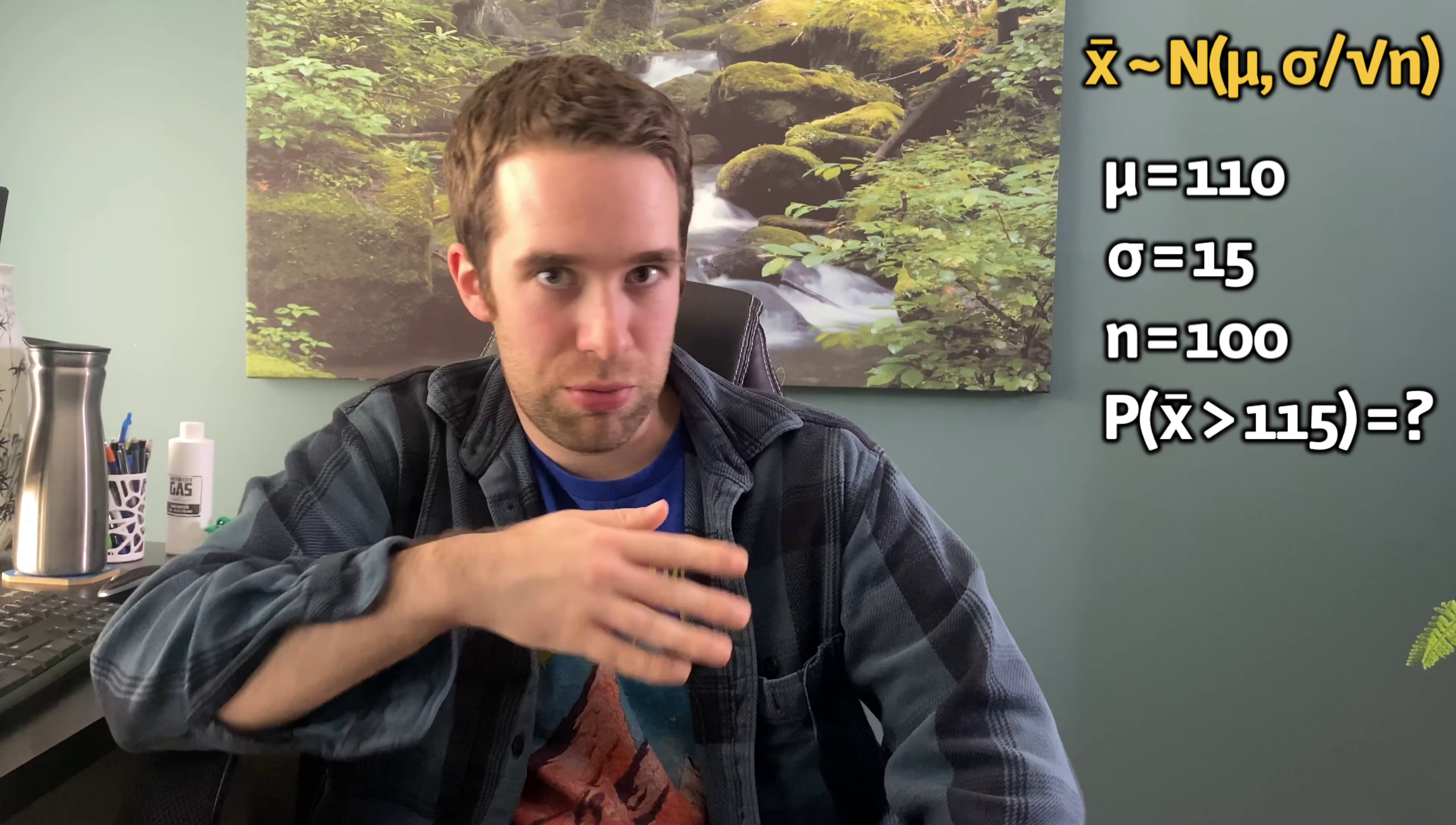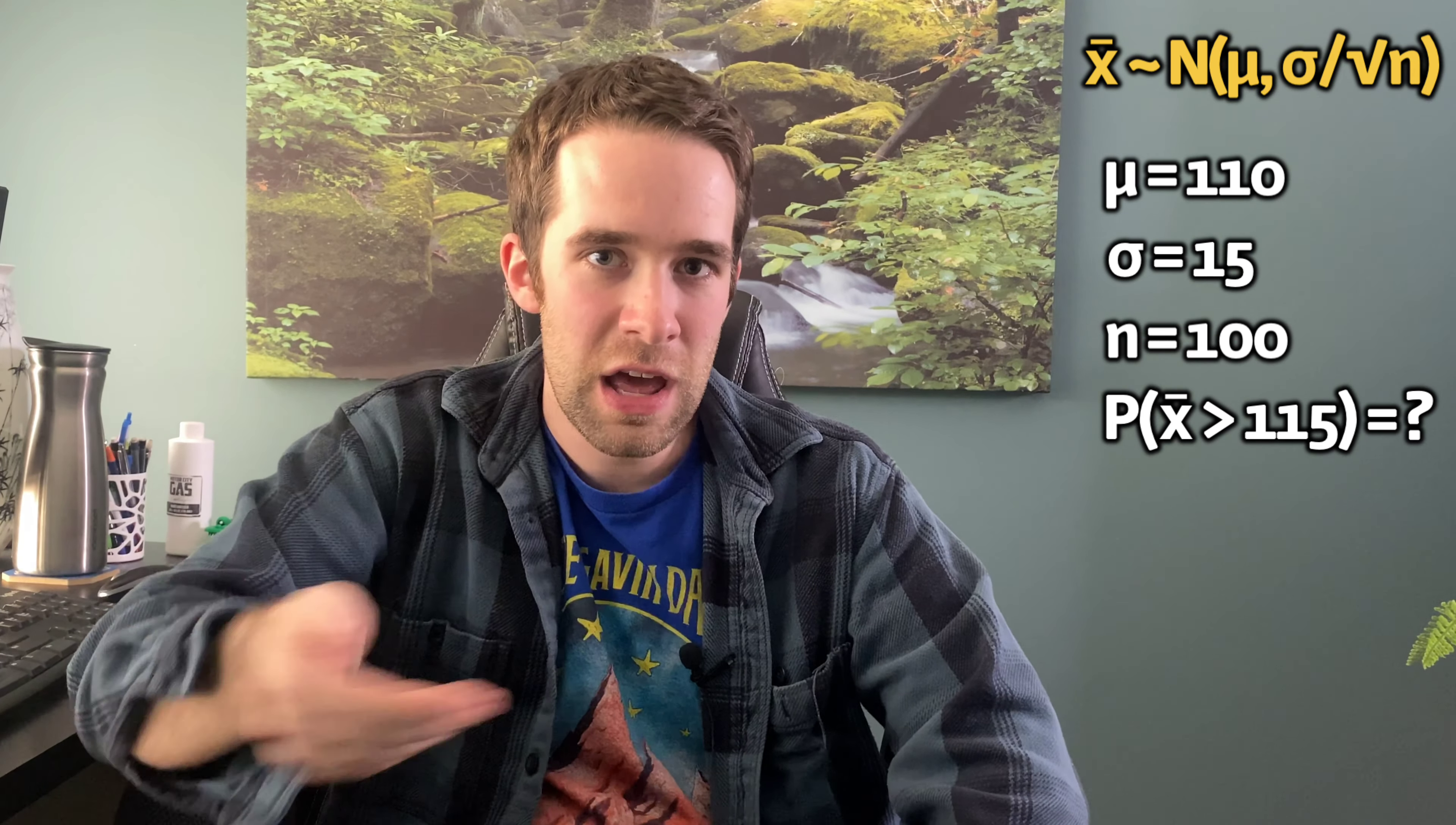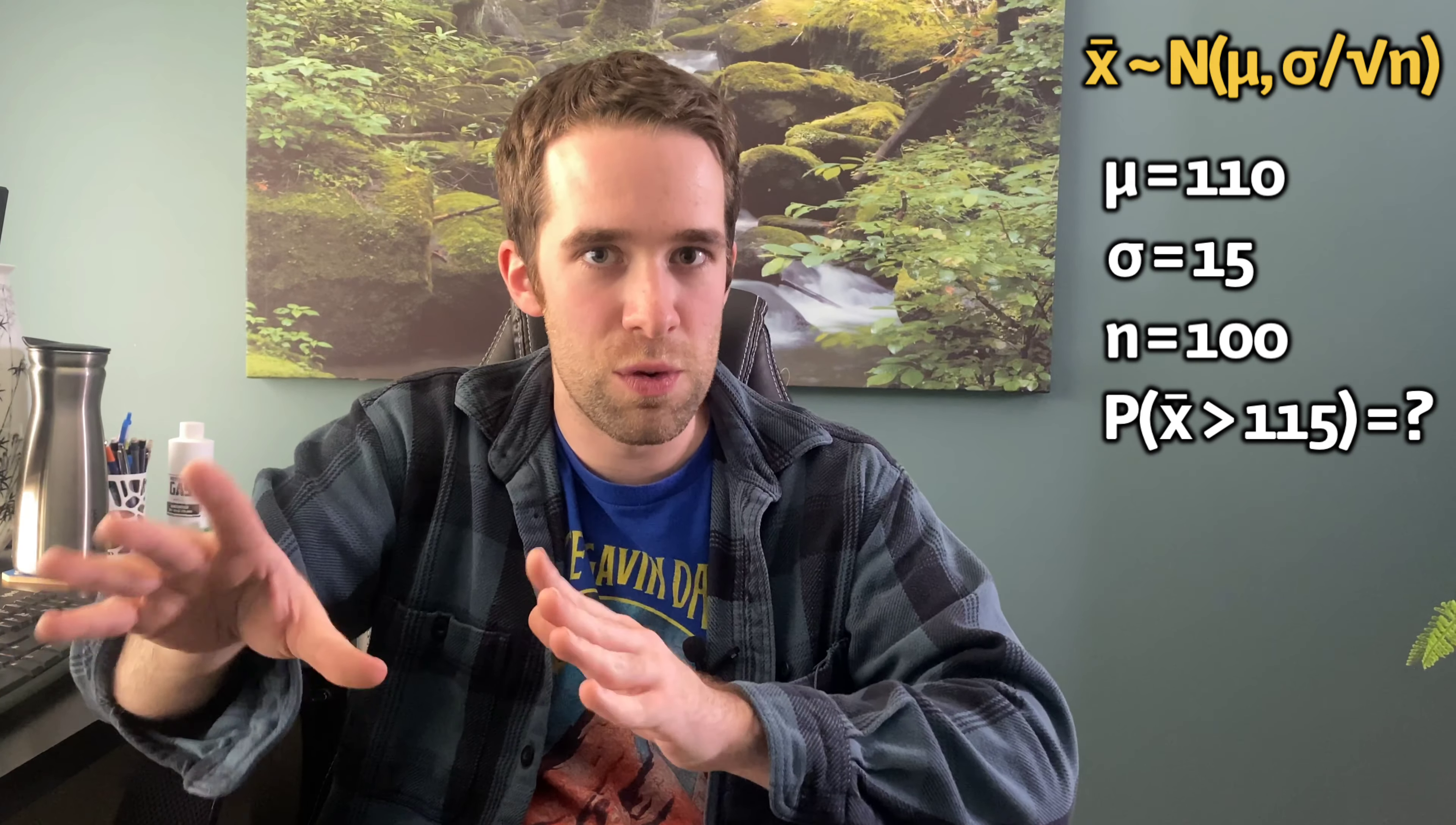Though we know the population mean and the population standard deviation here, so we can calculate the distribution of X bar, it's going to be approximately normally distributed with a mean equal to 110 and a standard deviation equal to 15 divided by the square root of 100, that is, 1.5.